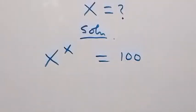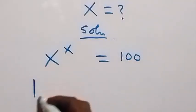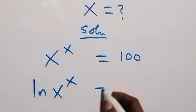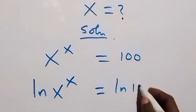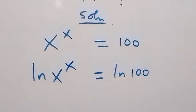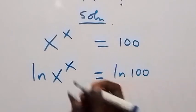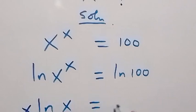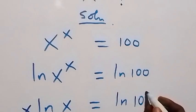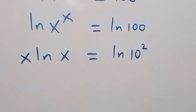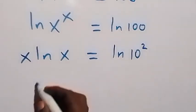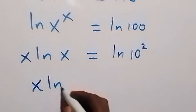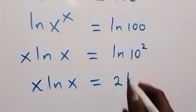Let's take the ln on both sides. So here we have ln of x raised to power x equals to ln of 100. We apply the power law of logarithm, so this x can come to the front. We have x·ln x now equals to ln 10 raised to power 2, and this can be written as x·ln x equals to 2·ln 10.